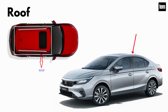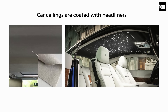Roof. A roof is the top portion of a vehicle that sits above the passenger compartment, protecting occupants from sunlight, wind, rain, and other external elements. The car ceilings are typically coated with headliners that provide insulation against heat and noise, and also hide wires and hardware for electrical components, antennas, and other accessories.